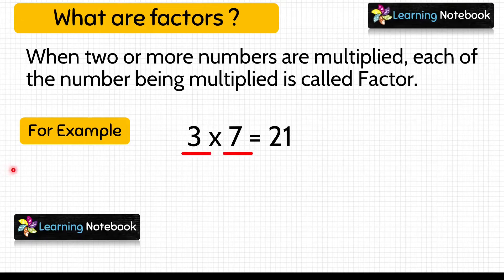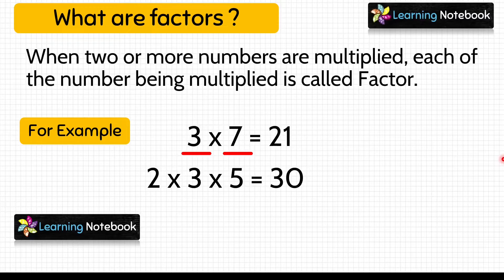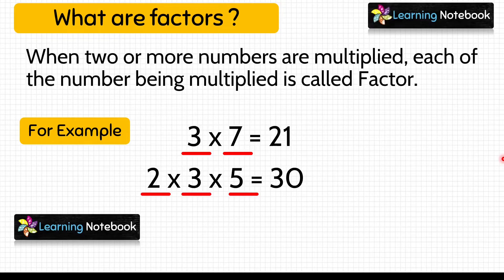Let's take one more example: 2 into 3 into 5 equals 30. So 30 is a multiple of 2, 3, and 5. And remember that 2, 3, and 5 are factors of 30. So when two or more numbers are multiplied, each of the numbers being multiplied is called the factor.